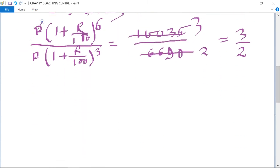P and P cancel, the base is the same, so the power will be 6 minus 3, which becomes 3, equals 3 by 2. Now putting this value in equation first.